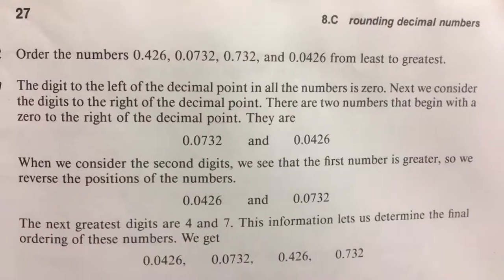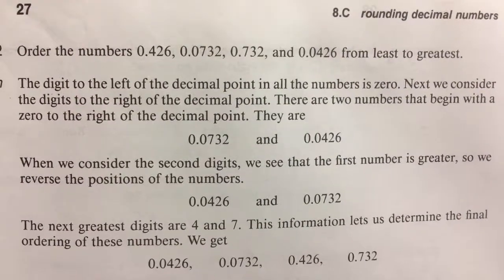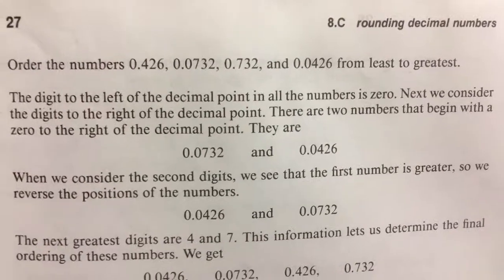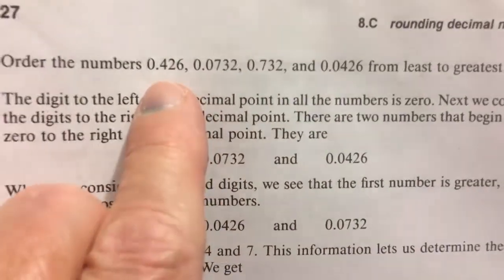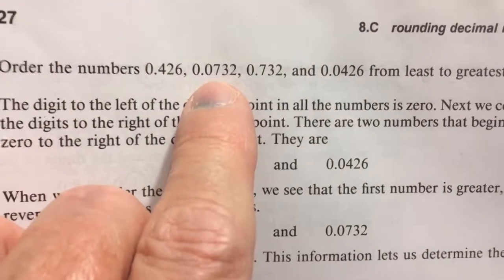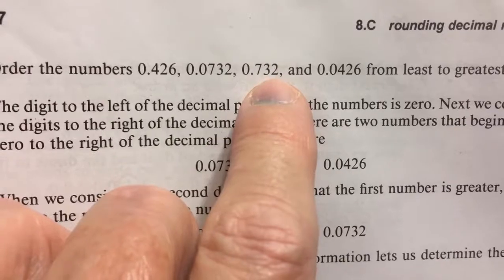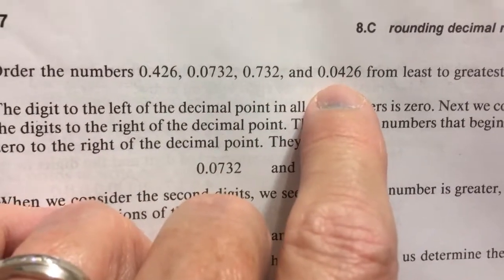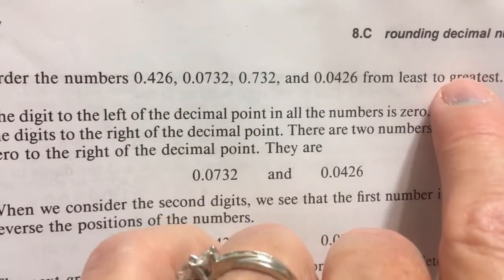Let's look at these four numbers. I decided not to write them on the board since there are only four. They are: 0.426, 0.0732, 0.732, and 0.0426. We're going from the least to the greatest.